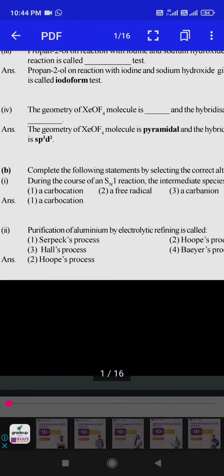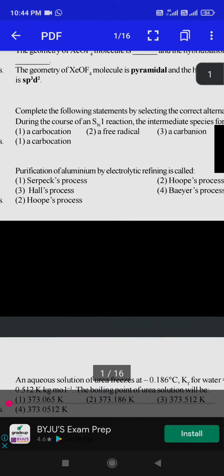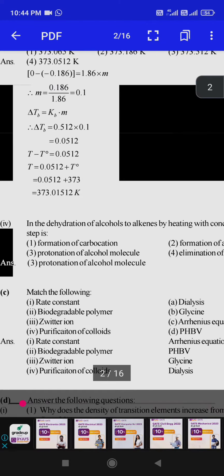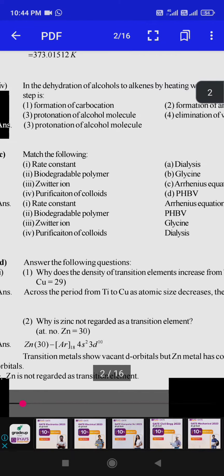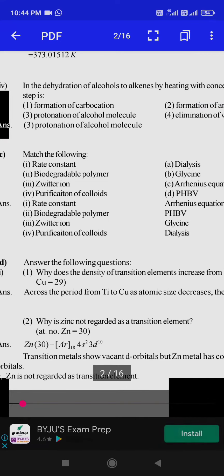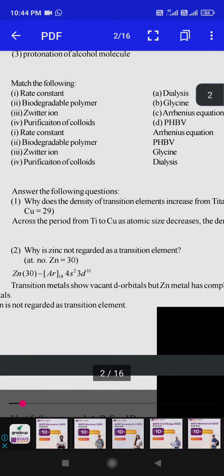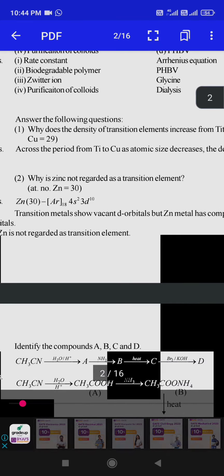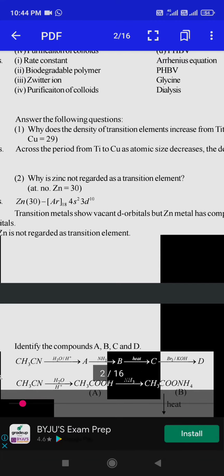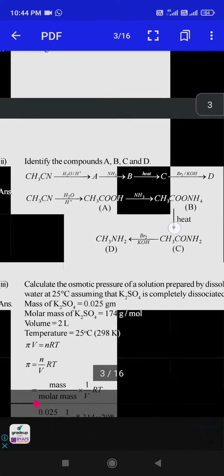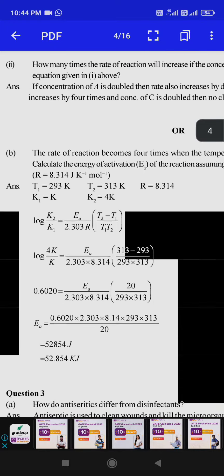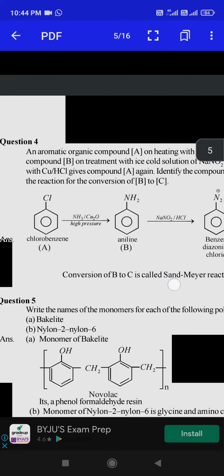Purification of aluminum is also not in the syllabus. All these questions are not in your syllabus. Here some questions are in your syllabus, some are not. This is the pattern. Why is zinc not regarded as a transition element? Just see the pattern first; later we will discuss the questions.